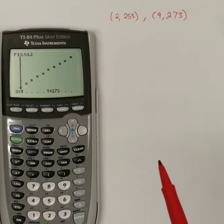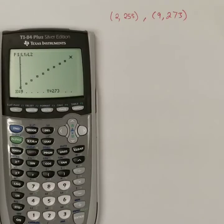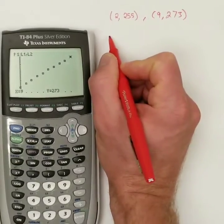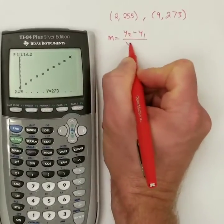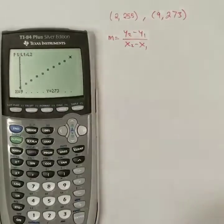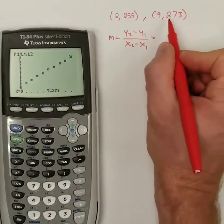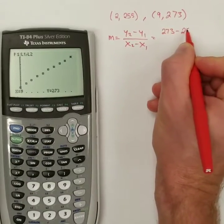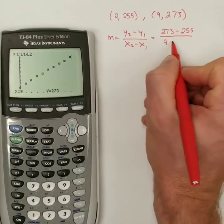And then I'm going to form the line going through those two points. Remember, to do that, we start by using the slope. We know that m is y2 minus y1 over x2 minus x1. And so, I'm going to plug in my values. 273 minus 255 over 9 minus 2.